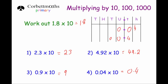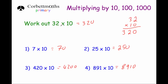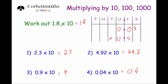Just to recap: if we multiply whole numbers by 10, we can just add a zero on the end as a shortcut. And if we're multiplying decimal numbers by 10, we just move each of the digits one column to the left to make them ten times bigger.